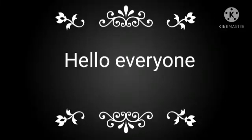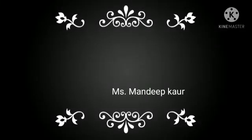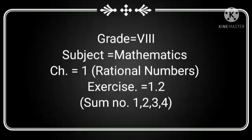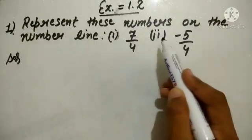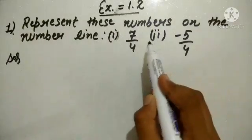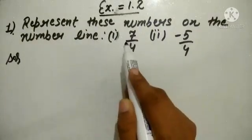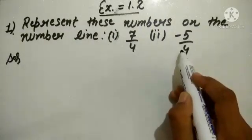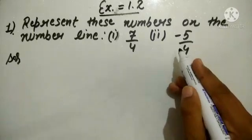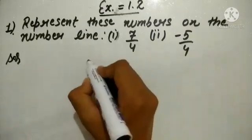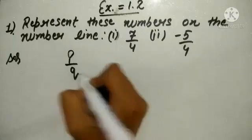Hello everyone, this is Mandipur. I welcome you all in maths class. Today we are going to start with exercise 1.2. The statement of the first sum is: represent these numbers on the number line. The first part is 7 over 4 and the second is minus 5 over 4. These are rational numbers which are in the form of P over Q.